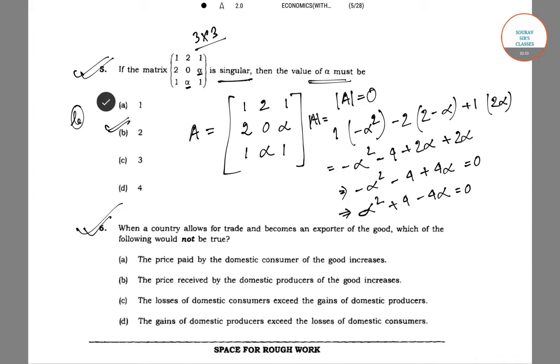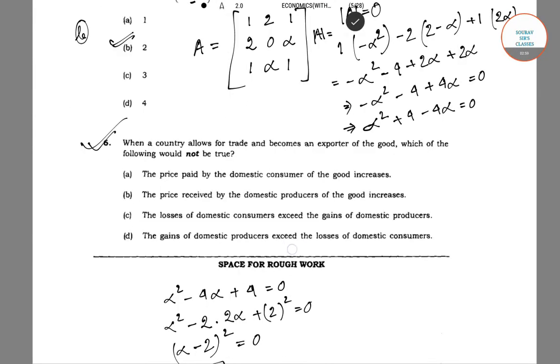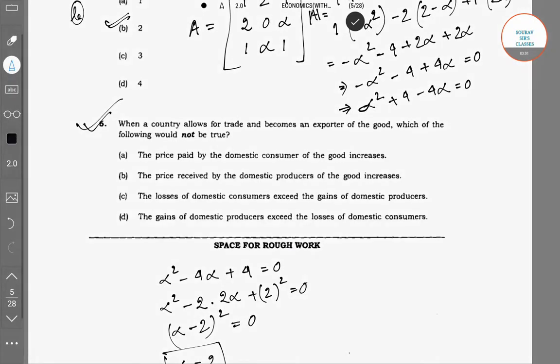So option B is correct. If the value of alpha is two, then the matrix A is singular. Now coming to question number six.